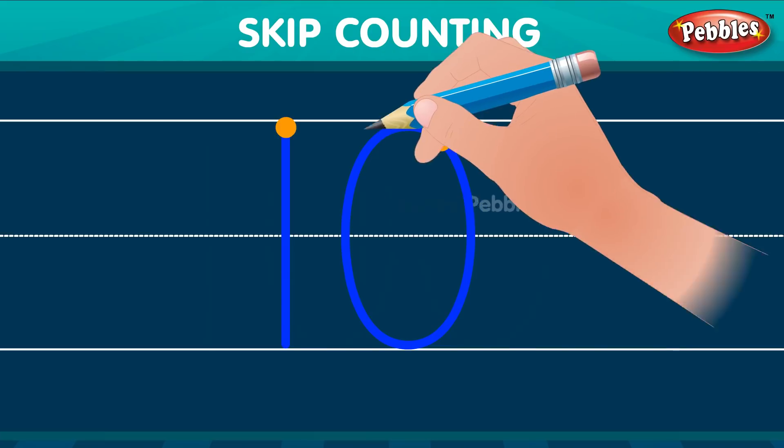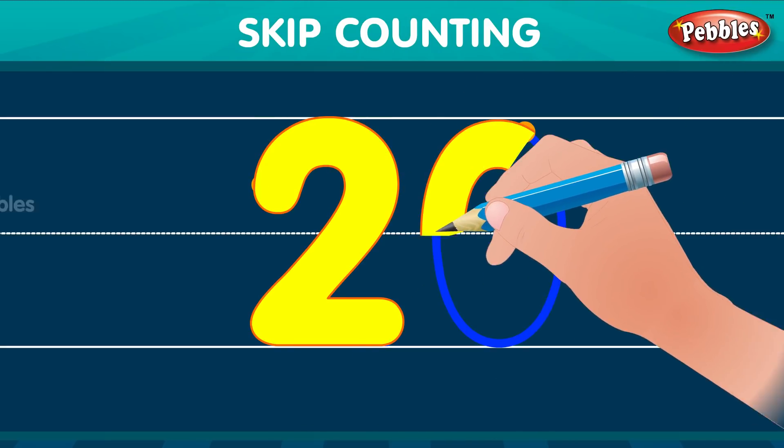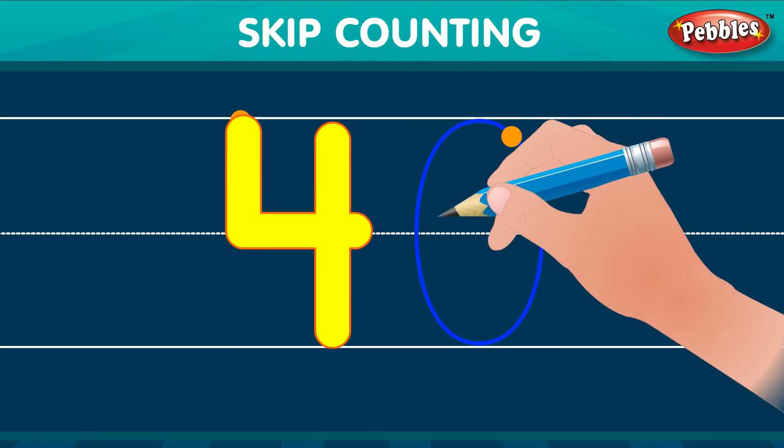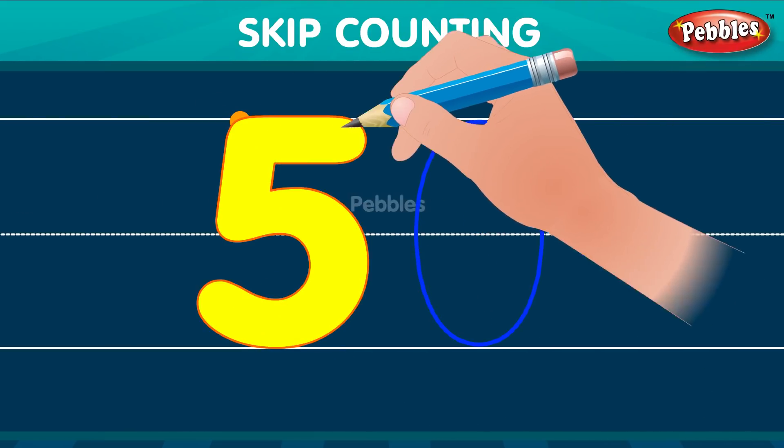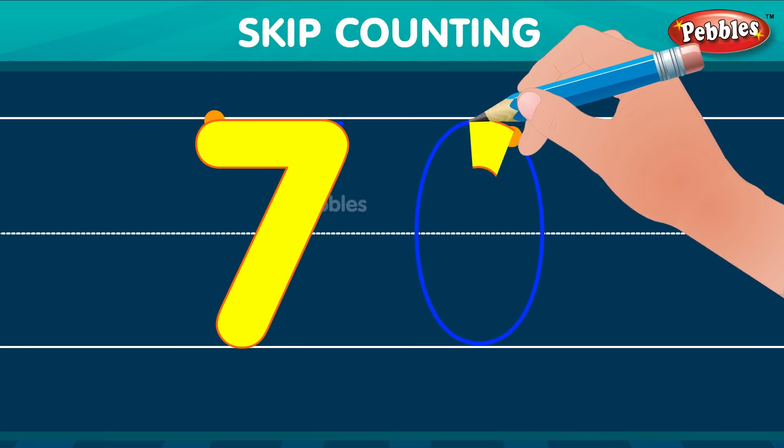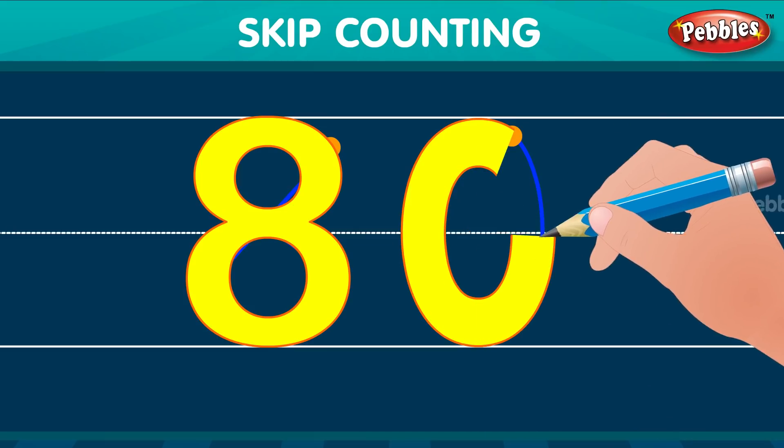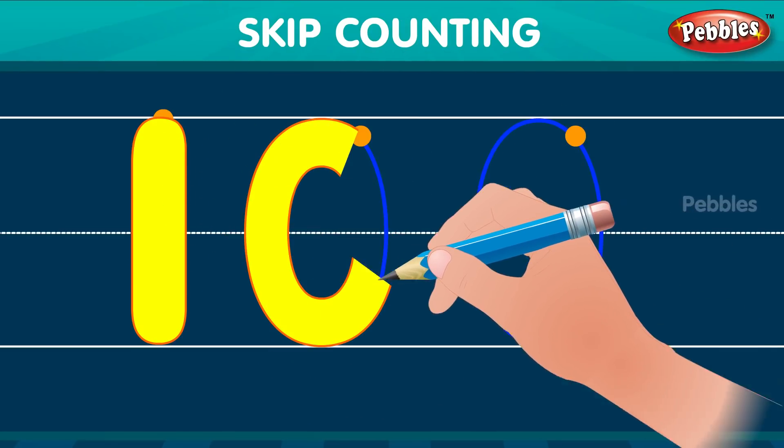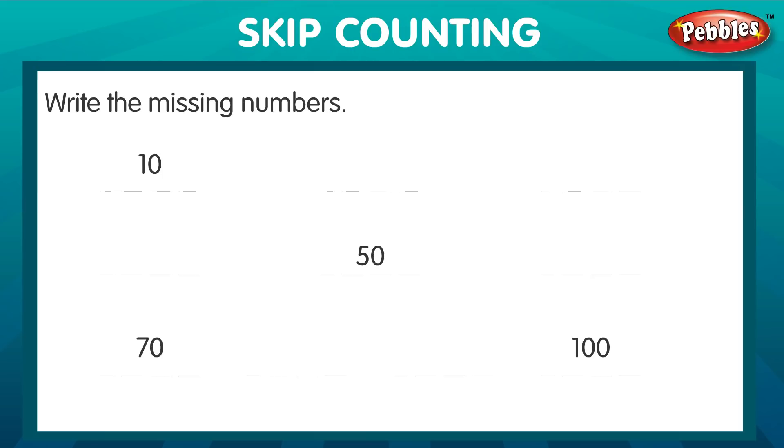Say and trace. Ten. Twenty. Thirty. Forty. Fifty. Sixty. Seventy. Eighty. Ninety. One hundred. Twenty. Thirty. Forty. Sixty. Eighty. Ninety.